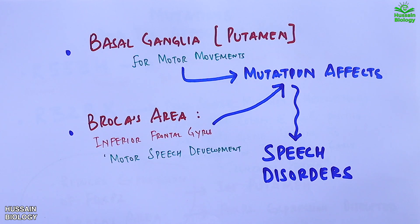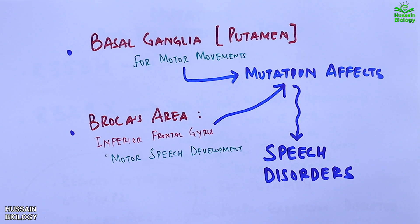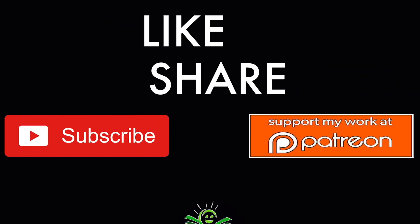So both brain areas associated with speech get disrupted when the FOXP2 gene mutates, leading to speech disorders like developmental verbal dyspraxia or childhood apraxia of speech. That's all about FOXP2 gene and its association with speech disorders.